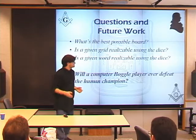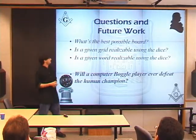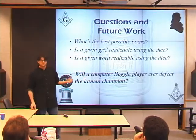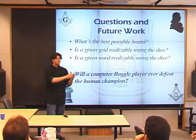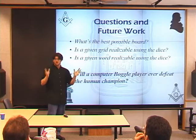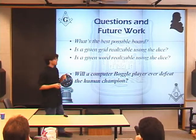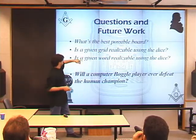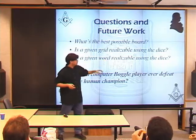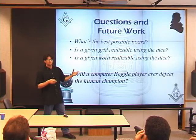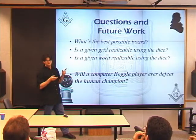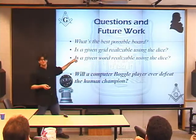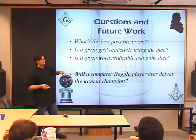There's a little bit more work to be done with Boggle. You can ask: what's the best possible board? Boyan's thesis tried to find the best possible board without taking into account the specific Boggle dice — just arbitrary letters in every position. He came up with a board with a value of 3,271 points, but that board cannot be realized using the actual Boggle dice. So the question for real Boggle dice is: is a given grid realizable using the dice? Is a given word realizable? If you give me some word, can you find some subset of the dice that expresses that word? That's in fact an instance of the bipartite matching problem — there's a real intro theory connection there.